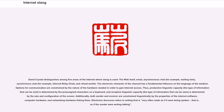The electronic character of the channel has a fundamental influence on the language of the medium. Options for communication are constrained by the nature of the hardware needed to gain Internet access. Thus, productive linguistic capacity — the type of information that can be sent — is determined by the pre-assigned characters on a keyboard, and receptive linguistic capacity — the type of information that can be seen — is determined by the size and configuration of the screen. Additionally, both sender and receiver are constrained linguistically by the properties of Internet software, computer hardware, and networking hardware linking them.